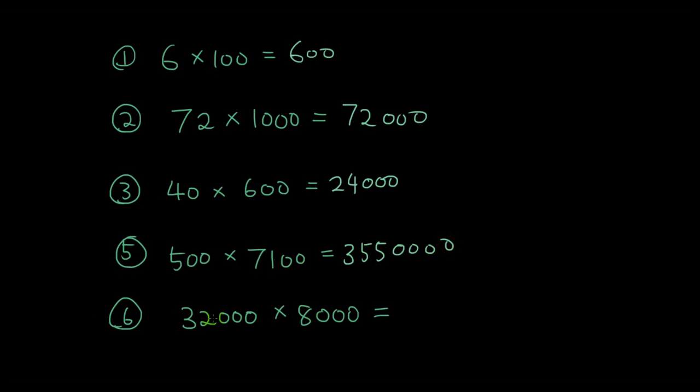32,000 times 8000. 8 times 2 is 16. 8 times 3 is 24. Plus 1 is 25. 6 zeros.